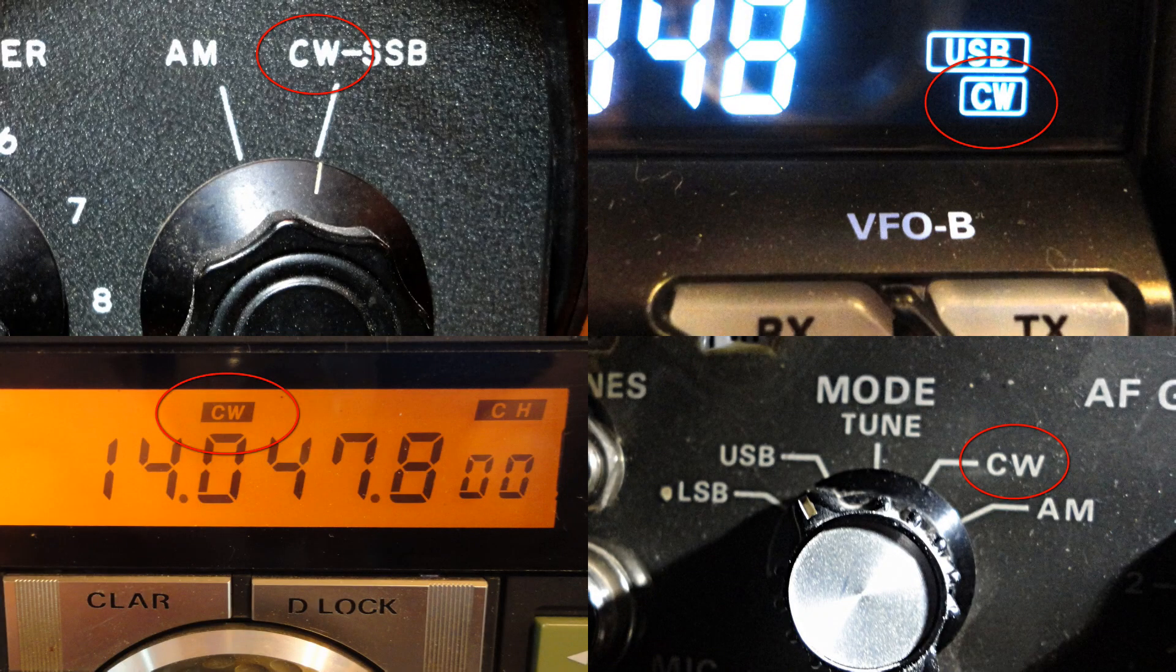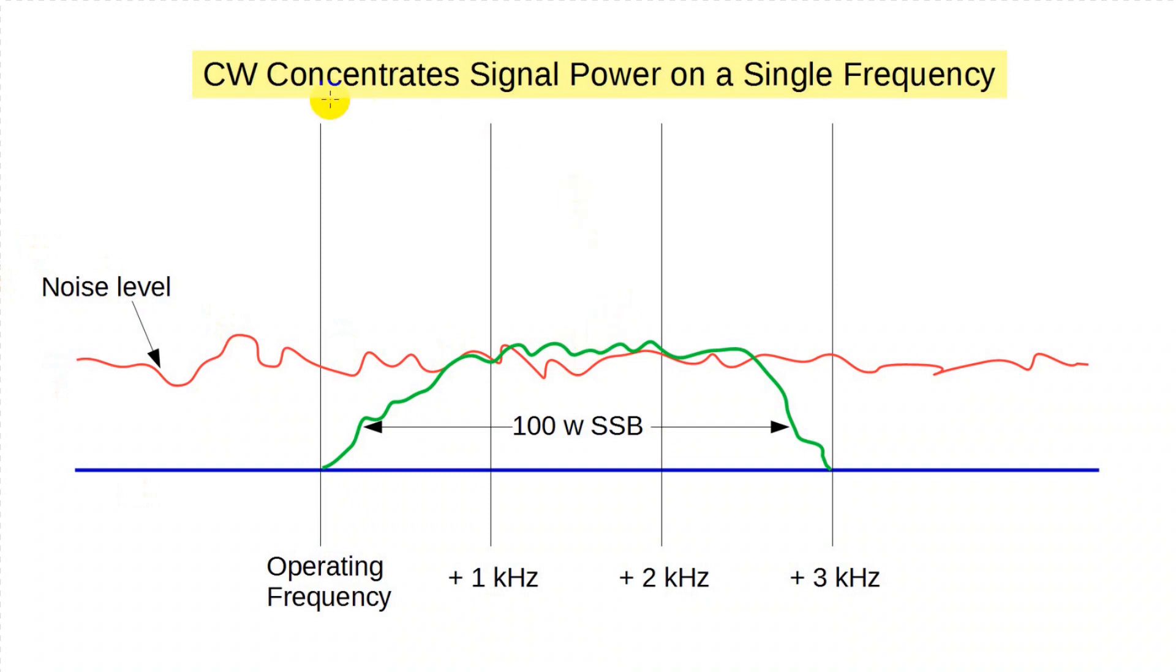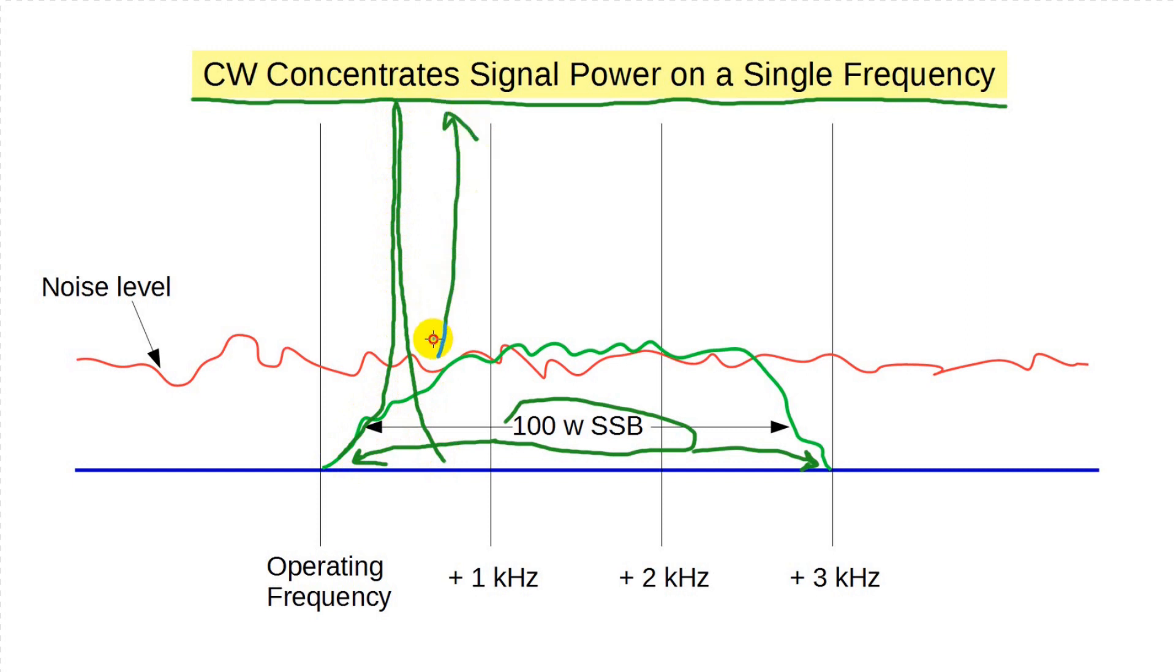If you have an HF radio, you already have the radio you need for CW. All rigs have it. A lot has been said about how CW will get through where your voice won't. You see, if you use voice, you spread your signal power across a wide range of frequencies. But if you concentrate all that power just on one frequency, it's amazing how much the signal-to-noise ratio jumps up. In fact, you often need considerably less power to conduct a CW QSO than with a single sideband QSO.